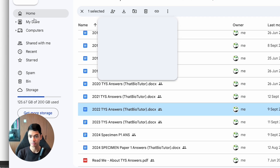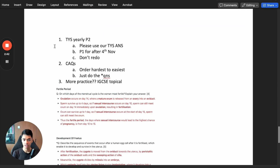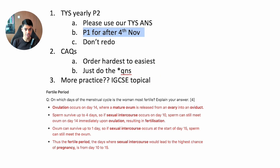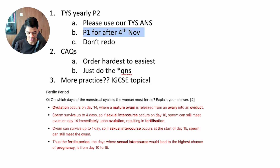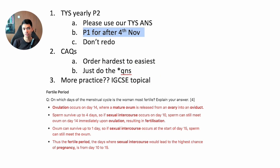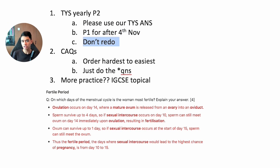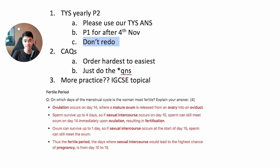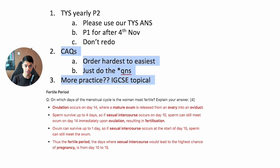So use our TYS answers — we're updating them for you and showing you how we'd answer under the 2024 syllabus. Next: save all the Paper 1s for after 4th November, after the Paper 2 exam. You'll have one week to grind Paper 1, and it's the easiest and fastest to improve. Don't waste time on it now — you have other subjects, Paper 2, and Paper 3 to study for. Also, some people ask whether to redo the TYS yearly. I would say no; the benefit is too low.